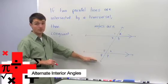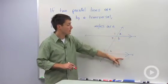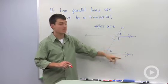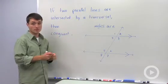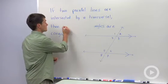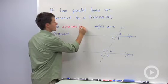When we have two parallel lines that are intersected by a transversal, and again my parallel lines I identify by using the same number of arrows, then two special angles are congruent, and that is alternate interior angles.